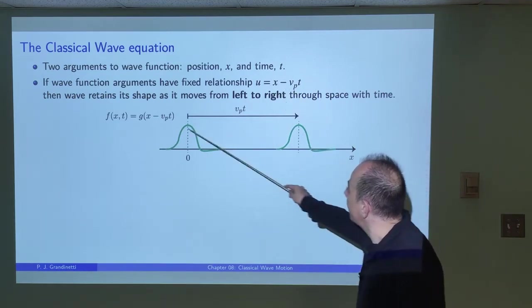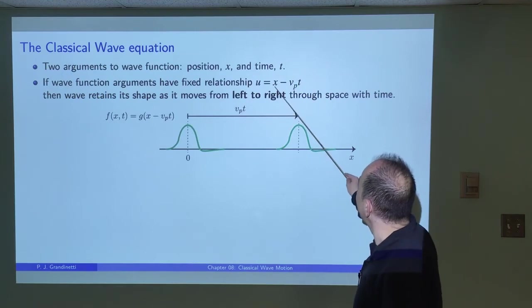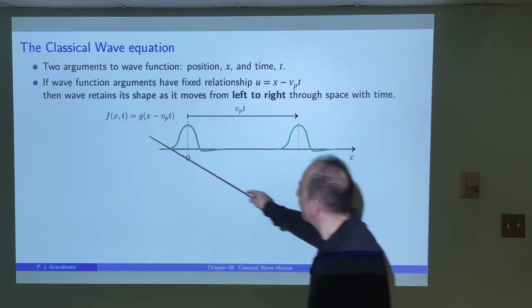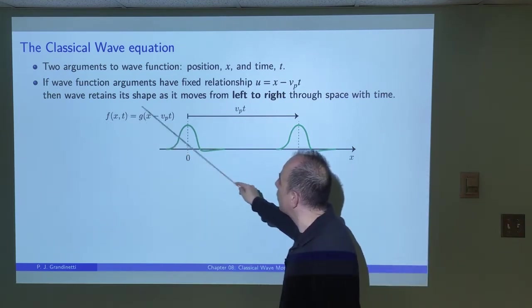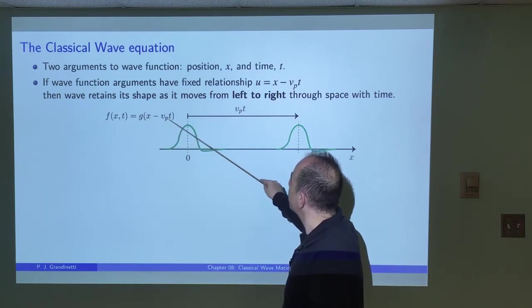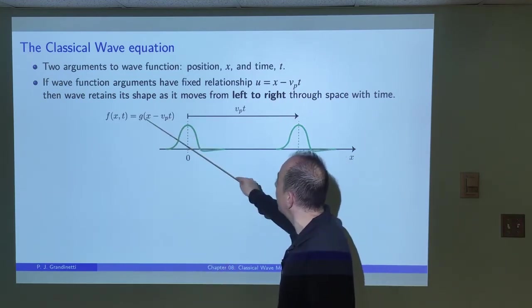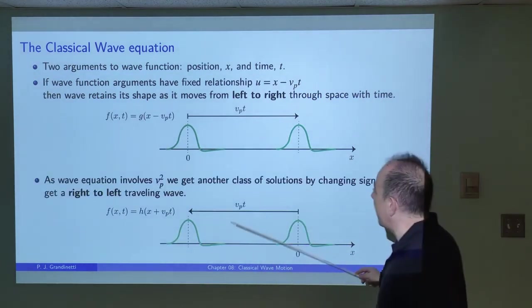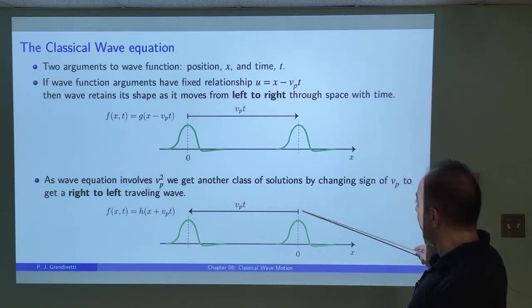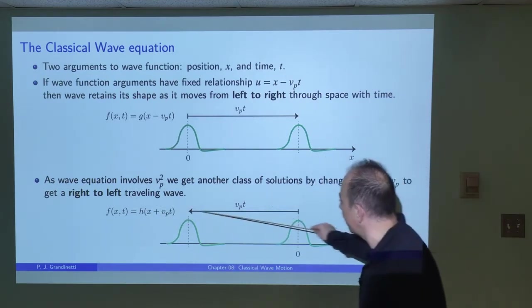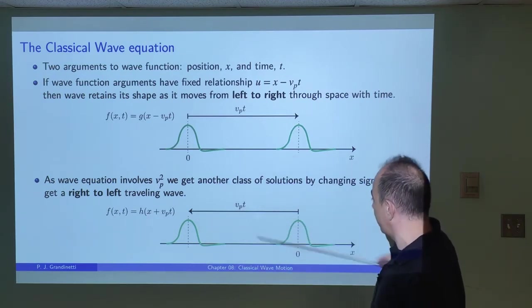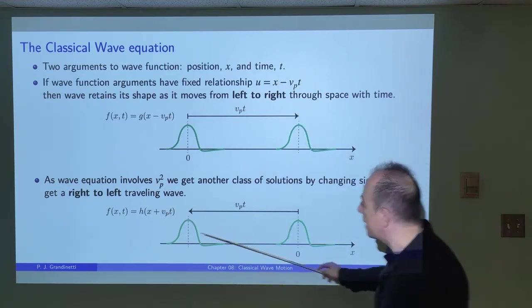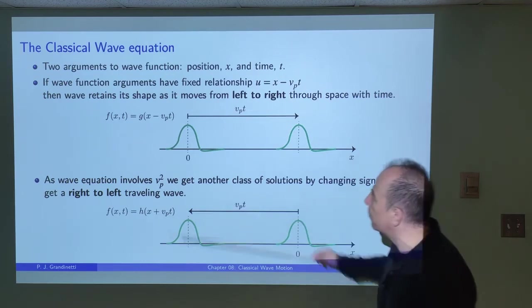So x minus vp·t describes a wave moving from left to right — whatever the wave function is, it moves from left to right. Similarly, you can have solutions going from right to left: all you have to do is change the sign from minus to positive, giving x plus vp·t, and that describes a wave moving from right to left without changing shape.